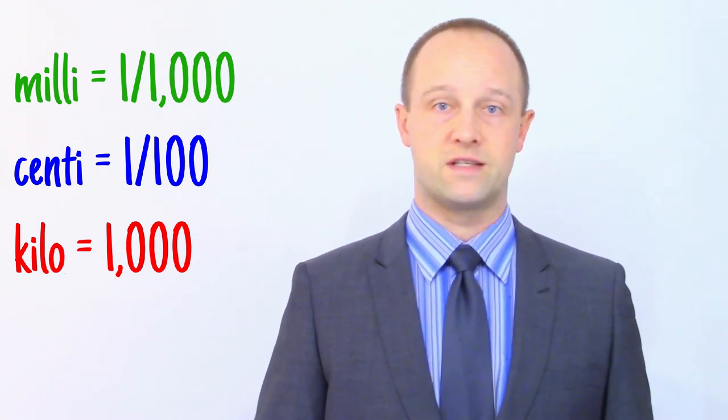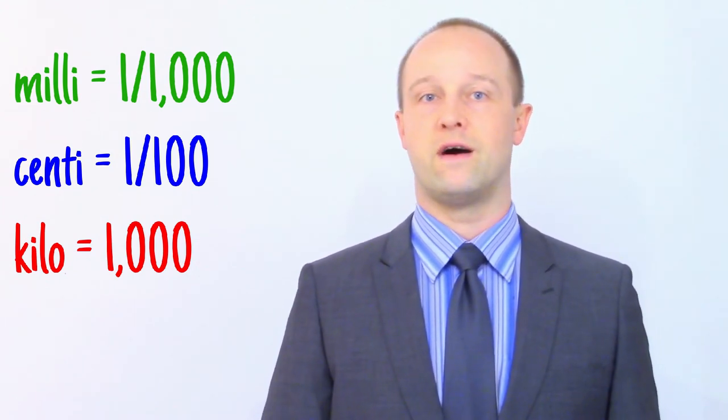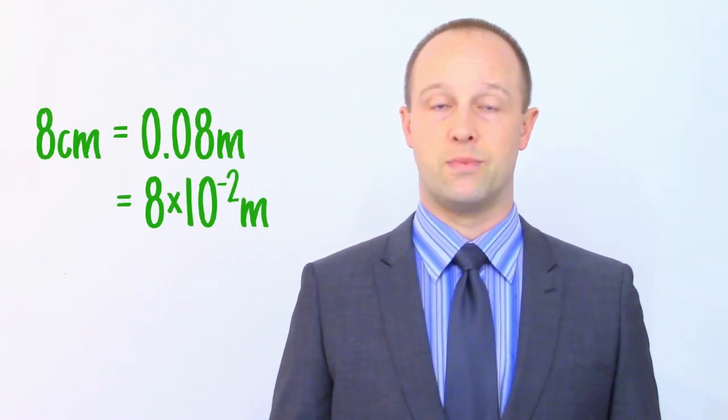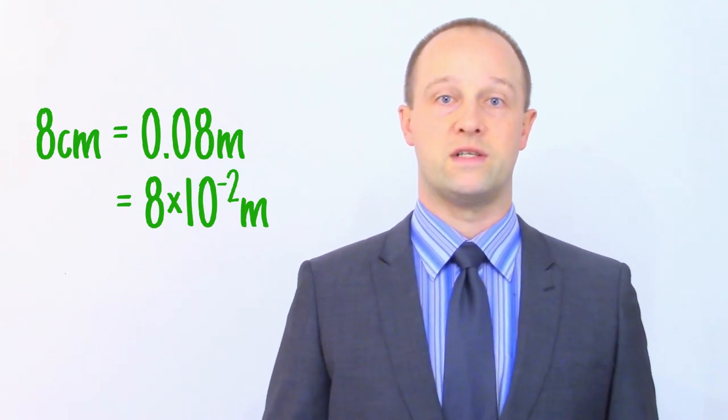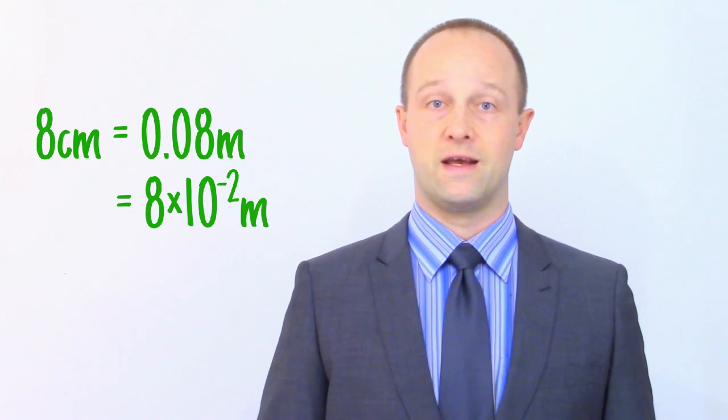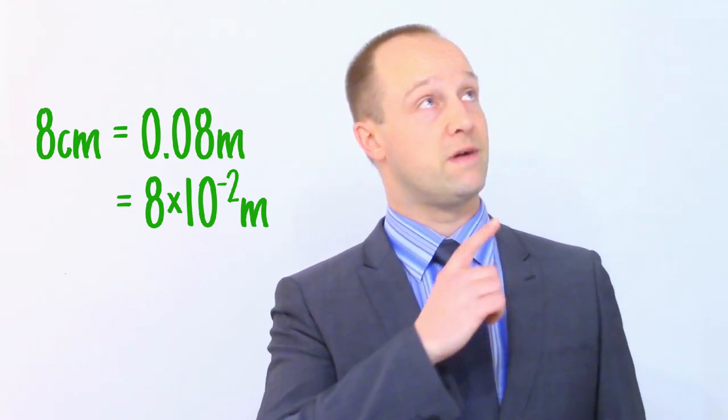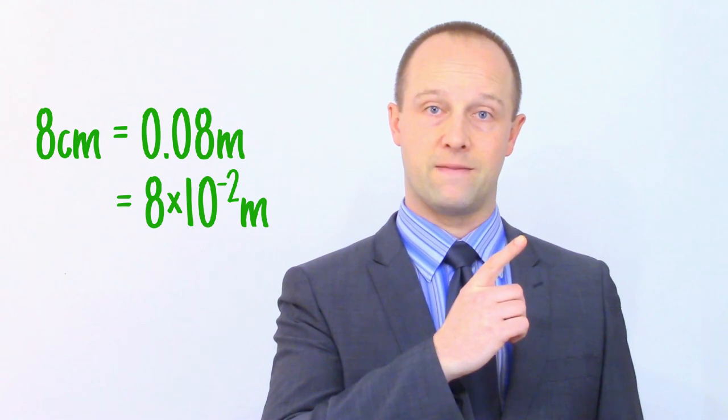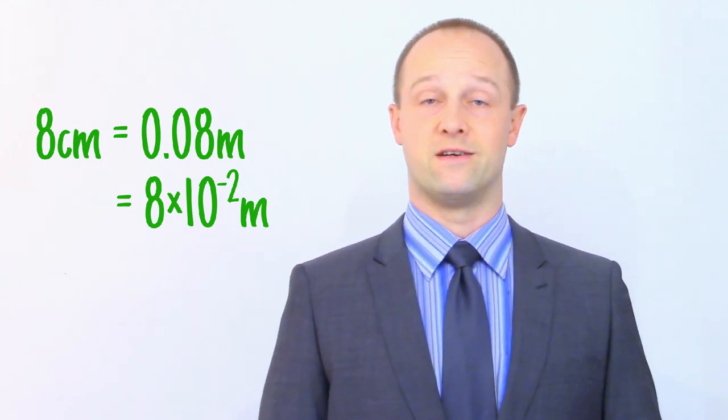Centi means one hundredth. A centimetre is one hundredth of a metre, for example. We could write eight centimetres in metres as 0.08 metres, or in standard form as eight times ten to the minus two metres. If you're unsure about using standard form, please check my video all about it by clicking here. It's actually way easier than it looks. Centimetres are a bit unusual in science. We only really bother with them because they're handy for measuring everyday objects.